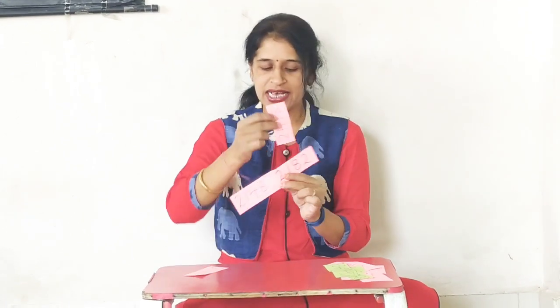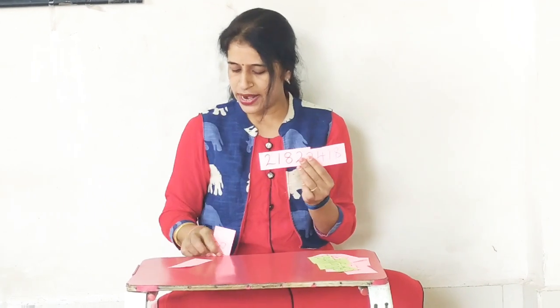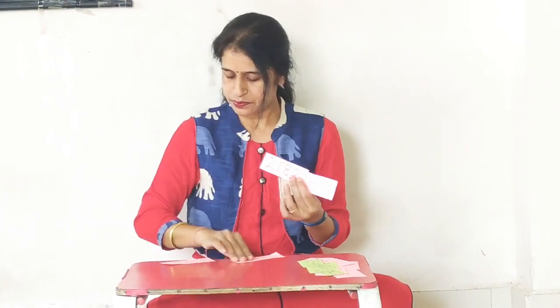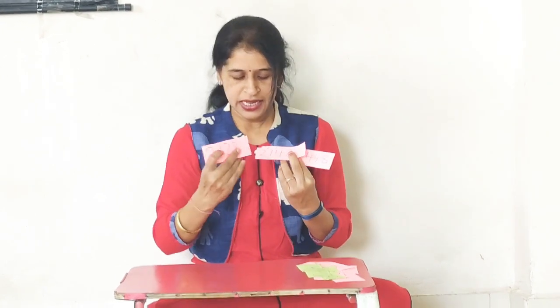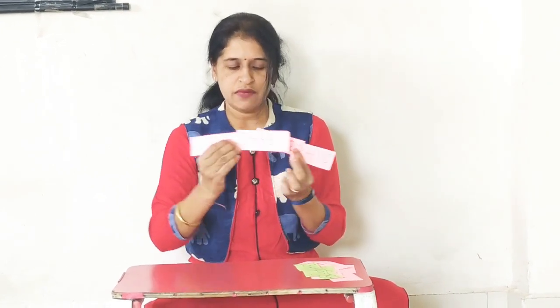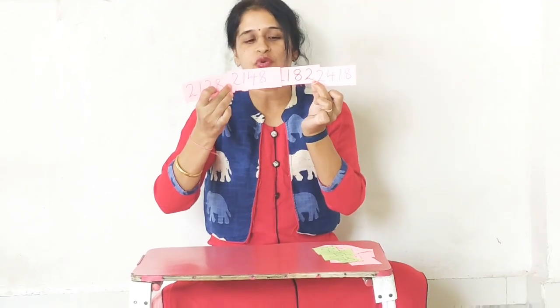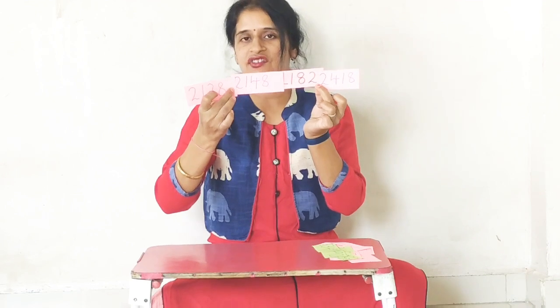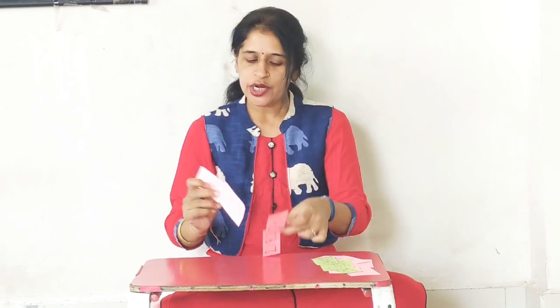So the ascending arrangement is: 2128, 2148, 2182, and last 2418. This is the way we arrange them in ascending order. Similarly, you can arrange these numbers in descending order — write the numbers on a piece of paper and try to arrange them. Today we have studied ascending order and descending order. Ascending is from small to big and descending is from big to small.